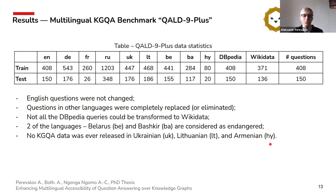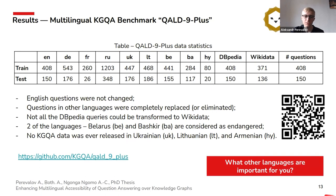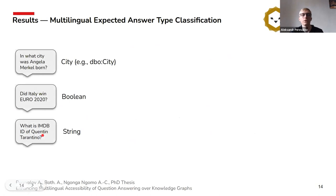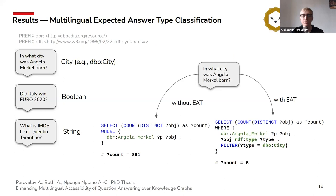This dataset can be accessed using the QR code or a link provided. We also work in the direction of providing multilingual components to question answering. One of these components is an expected answer type classifier. The expected answer type module aims to say what type of answer a user expects to get from the question answering system. This component helps to significantly reduce the search space of the answer — for example, without restriction by answer type we have 800 examples returned, but with the answer type we have only six.